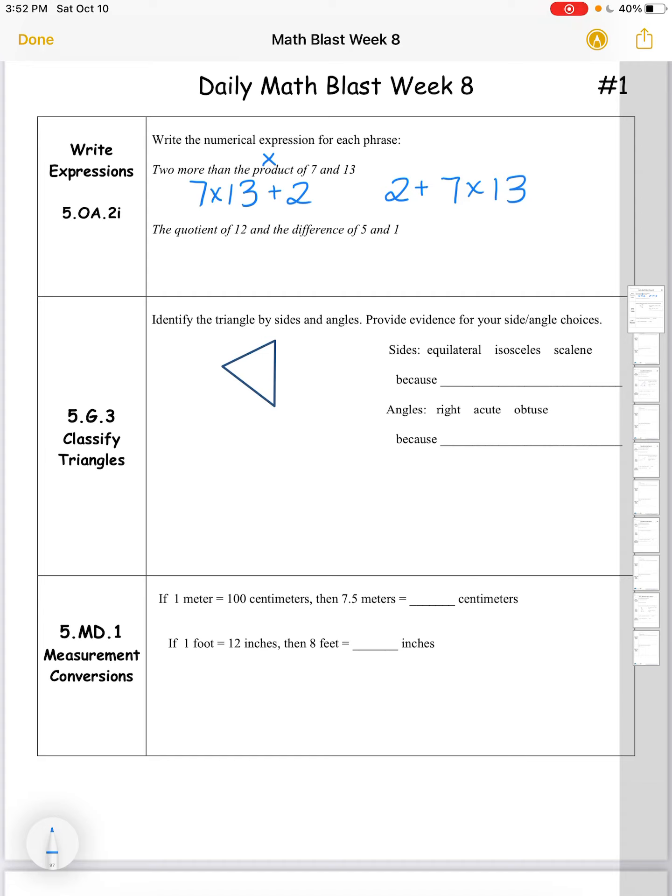Next, the quotient of 12 and the difference of 5 and 1. The quotient is the answer to a division problem, while the difference is the answer to a subtraction problem. So for this, I want to find the difference of 5 and 1. I want to subtract 5 and 1, and once I have that difference, I then want to find the quotient of 12 divided by that difference. So 12 divided by, in parentheses, 5 minus 1. And it is important that the parentheses are around the 5 minus 1, so that we make sure we do that first before the division.